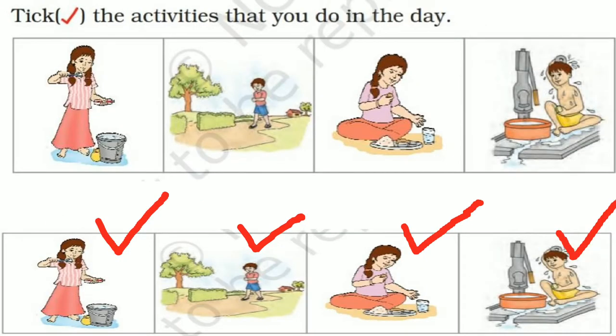Next, tick the activities that you do in the day. Children, a day has 24 hours, and these 24 hours are divided into two parts: daytime and nighttime. From morning till evening — that is, from sunrise till sunset — is called daytime, and the rest is nighttime. Here we have to tick the activities we do during daytime, from morning till evening, from sunrise till sunset.